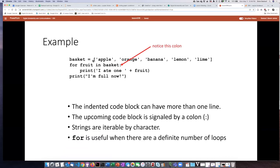Then it'll go back up. It'll loop to the next fruit, the basket banana. And it will say, I ate one banana. So each time it executes the indented code block, the value of fruit is the next item that is in the list.